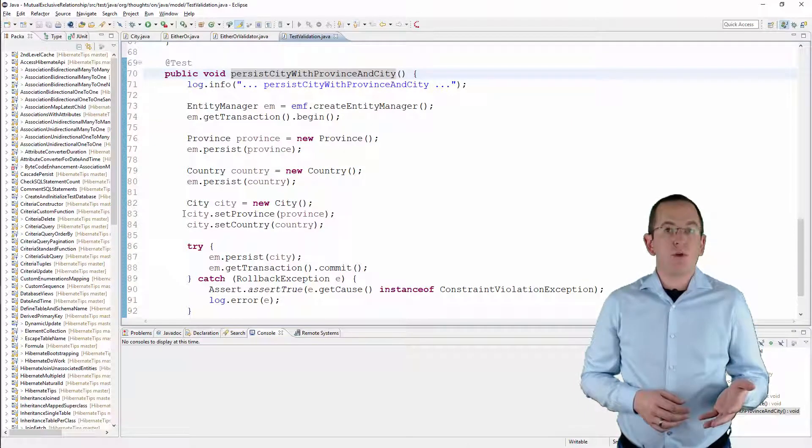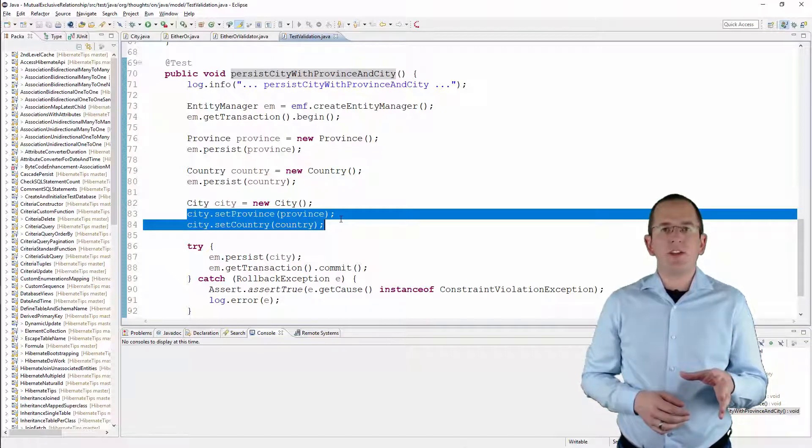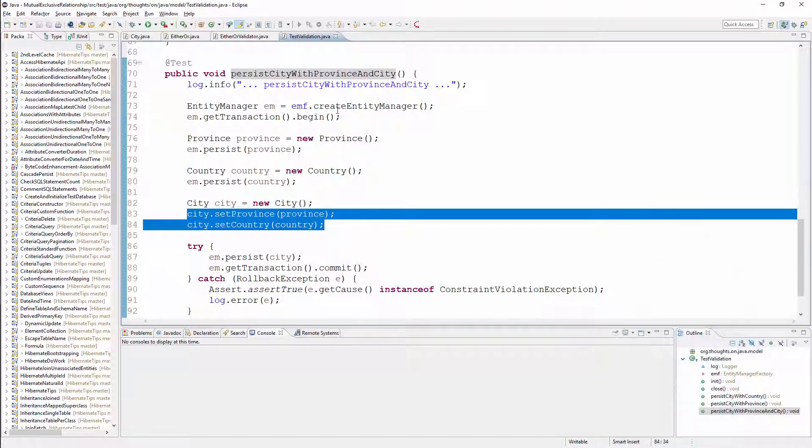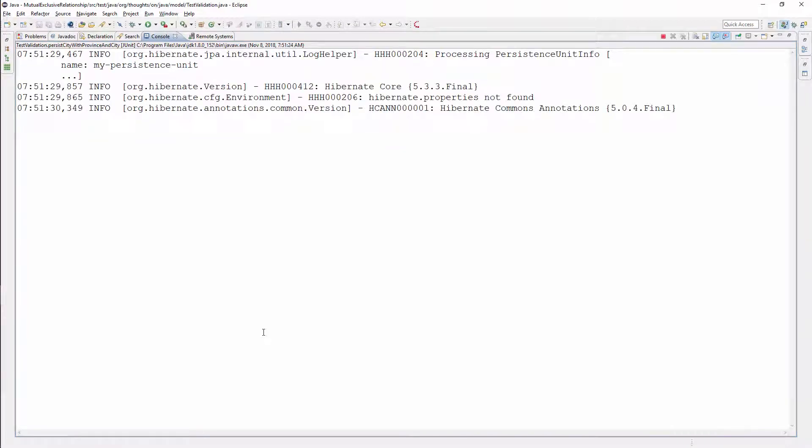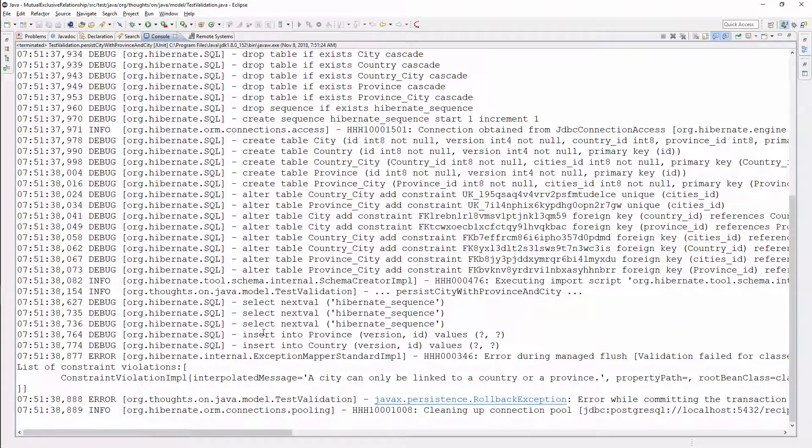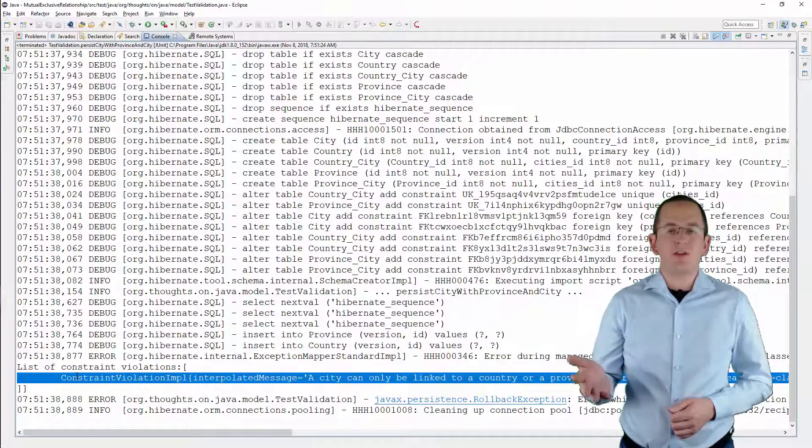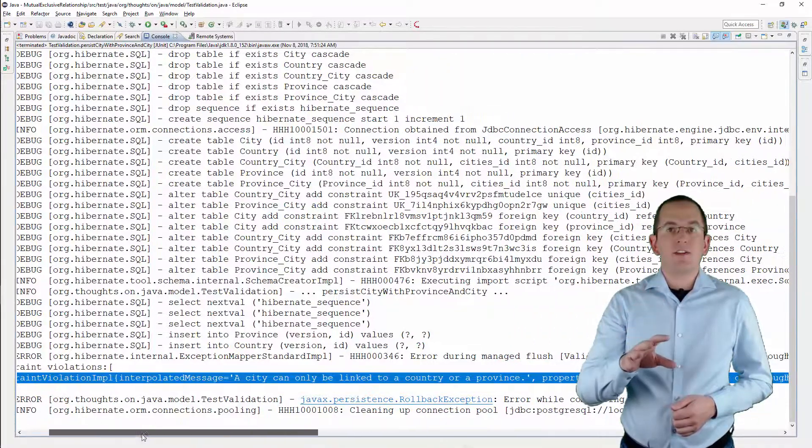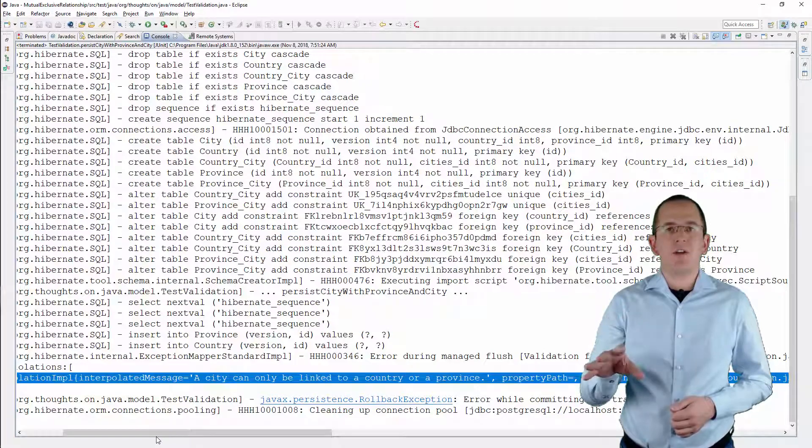If you now try to persist the city entity that's associated to a province and a country, HibernateValidator will throw a constraint violation exception, which causes a transaction rollback. And here you can see the log message caused by the constraint violation. It contains the message that we defined as the default message of the EitherOr annotation.